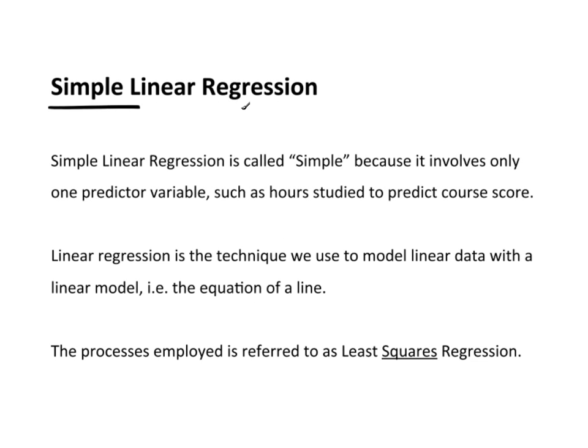So now let's take a look at the idea of simple linear regression. Simple linear regression is called simple because it only involves one predictor variable, such as maybe the number of hours studied, that's your predictor variable, to predict a course score, a grade that you're going to get in a class.